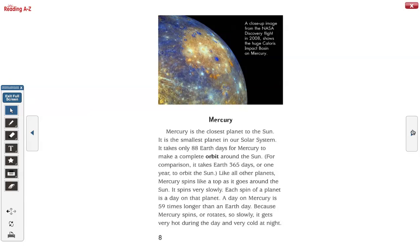Mercury. Mercury is the closest planet to the Sun. It is the smallest planet in our solar system. It takes only 88 Earth days for Mercury to make a complete orbit around the Sun. For comparison, it takes Earth 365 days, or one year, to orbit the Sun.